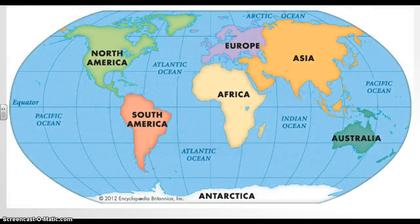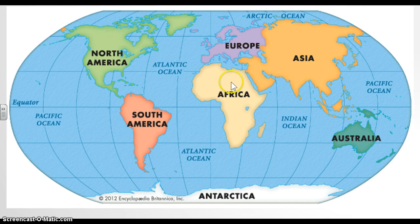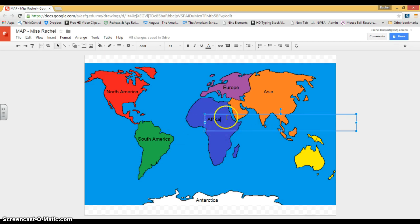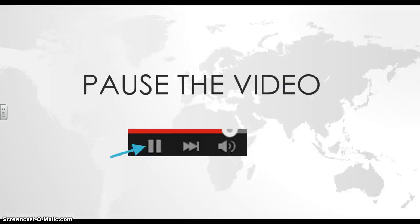The next continent we're going to add is Africa. Here is Africa right beneath Europe and Asia. I'm going to go to my text box, click on top of Africa — capital A-F-R-I-C-A, Africa. This one is kind of already in the middle, so I can leave it how it is. You can pause the video to add Africa to your map.